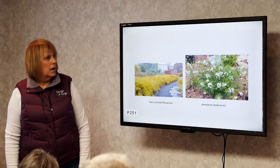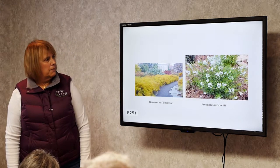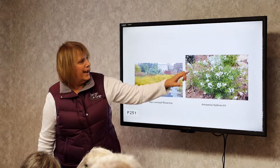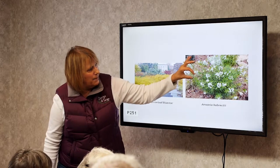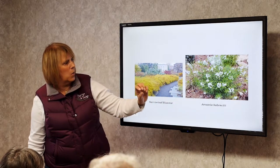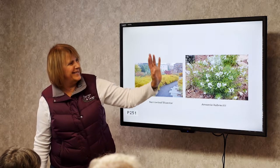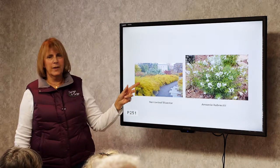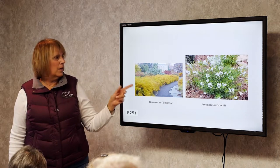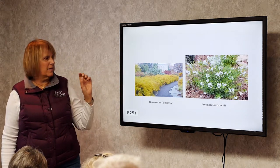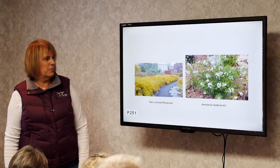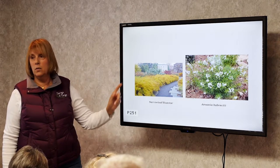Narrowleaf Blue Star. A very nice plant with a blue flower at the end of each light, airy, wiry stem. But that's not really why you plant it — you plant it for the fall color: the yellows, reds, oranges, and salmon tones. It's also deer resistant.